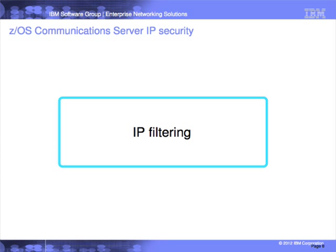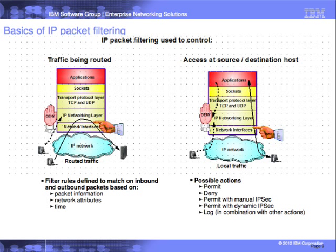Now we're going to take a deeper dive into IP filtering. Slide 9 illustrates the concept of routed traffic versus local traffic. If an inbound packet is not destined to an application on the box, or an outbound packet did not originate from an application on the box, it's being routed — going to another location, and we're functioning as a gateway. If traffic originates from or is destined to an application on the box, we call that local traffic and we're functioning as a host.